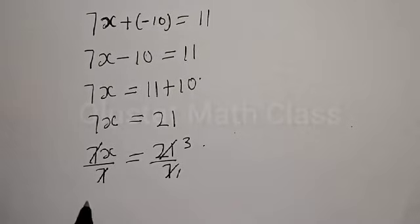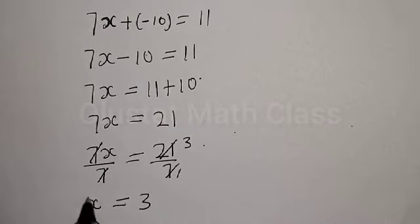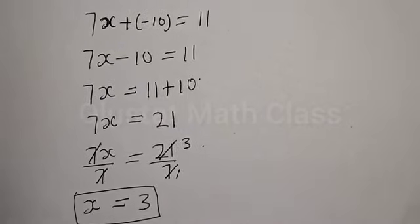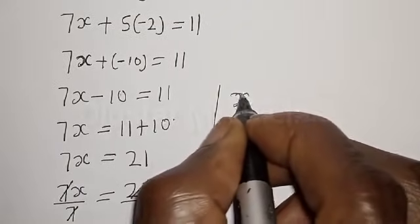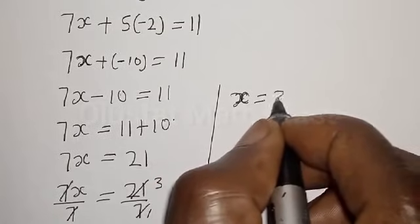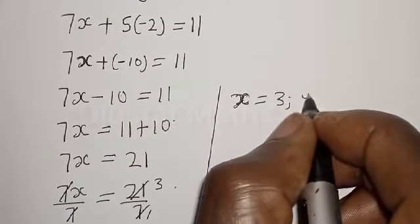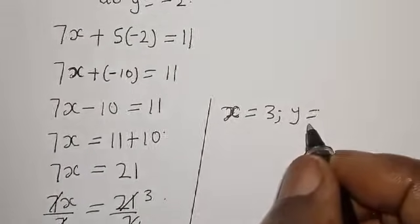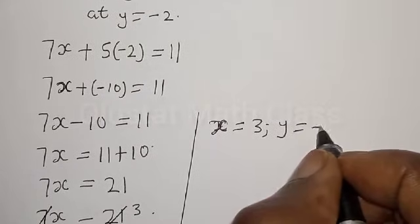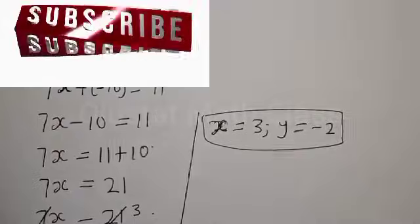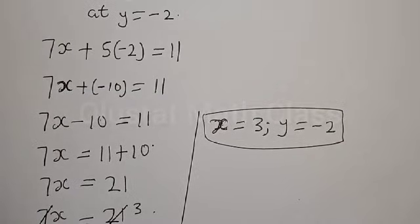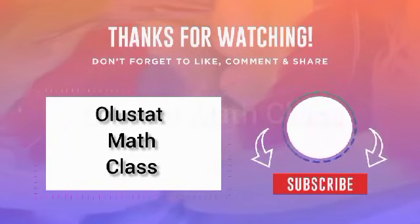Therefore the value of x is 3. Our final answers are x is equal to 3 and y is equal to minus 2. That is our final answer using the elimination method. If you have enjoyed the class, please don't forget to like, share, comment and subscribe. Thank you.